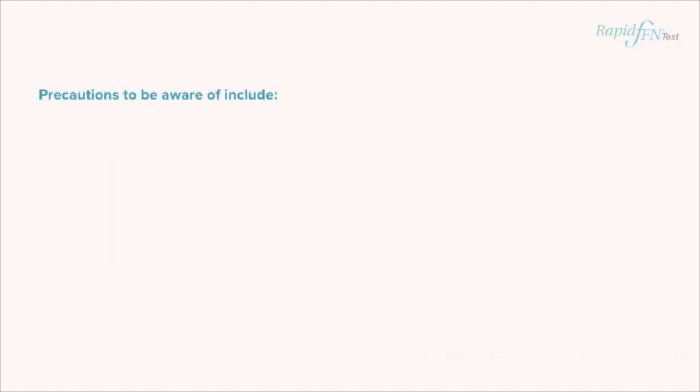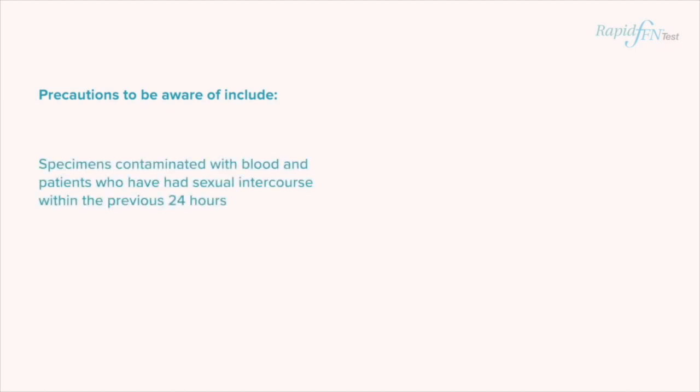Precautions to be aware of include specimens contaminated with blood and patients who have had sexual intercourse within the previous 24 hours. The presence of blood or semen in a fetal fibronectin sample can sometimes lead to a falsely elevated result. However, results under the specified threshold for treatment at your facility can still be considered valid in either of these situations, because contamination by blood or semen will not cause a falsely lowered result.